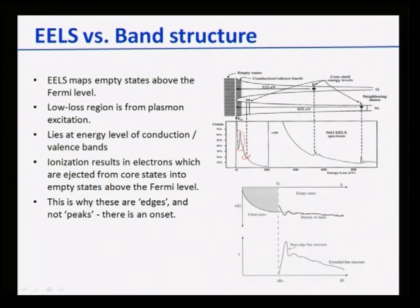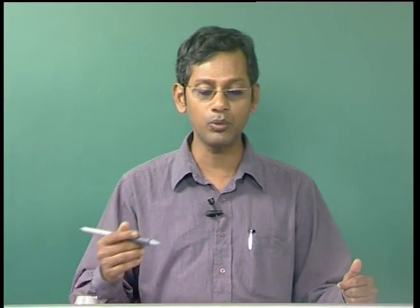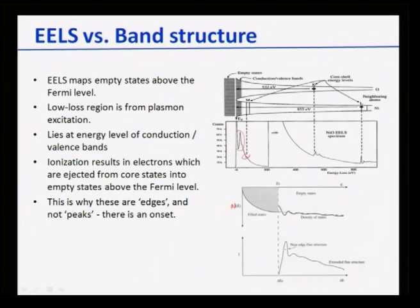This is shown again as a plot of density of states versus energy, with the Fermi level marked — filled states below and empty states above. If I do an experiment where the electron energy exceeds the transition energies, it can eject electrons from the shells with sufficient energy so that these electrons can move into the empty states, and you can get extended fine structure information in the EELS spectrum.